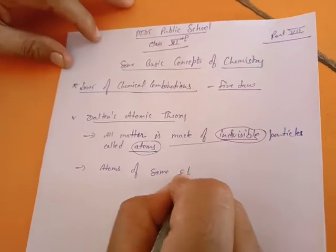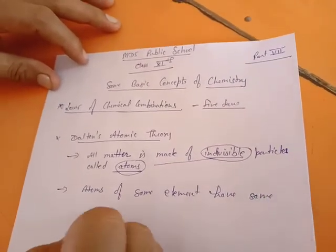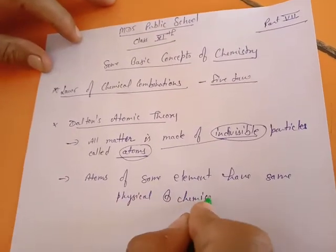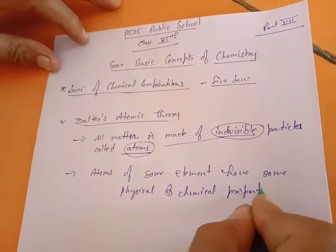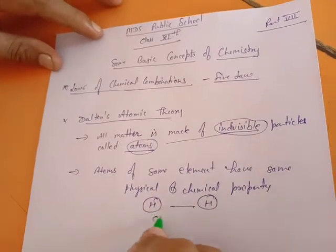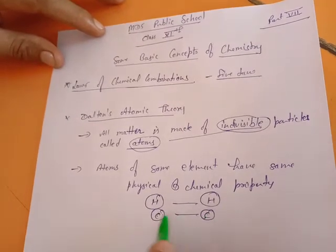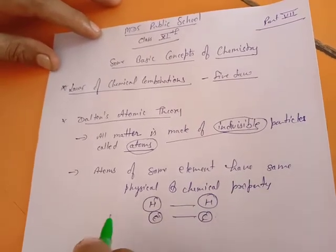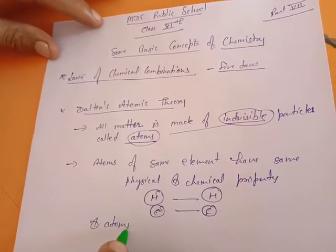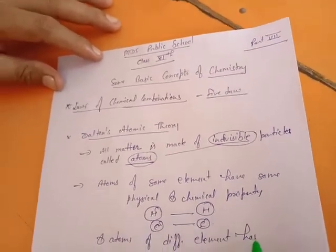The second postulate: atoms of the same element have the same physical and chemical properties. For example, one hydrogen atom compared with another hydrogen atom, or one carbon atom compared with another carbon atom — same element to same element — they will have the same physical and chemical properties. Atoms of different elements have different properties.